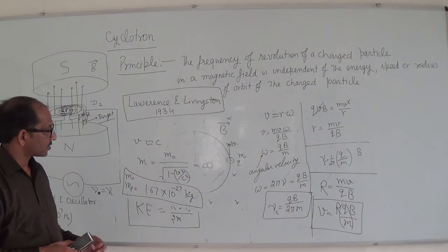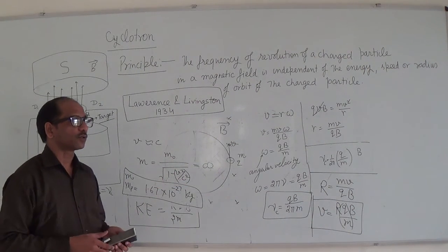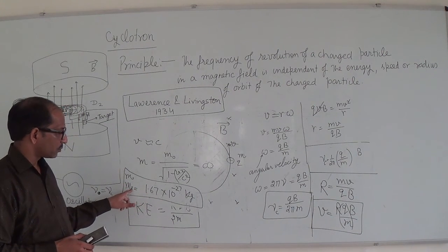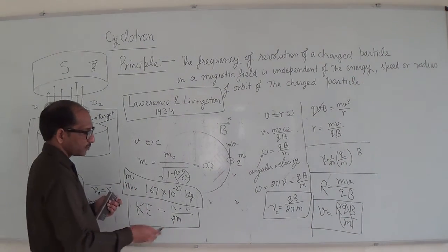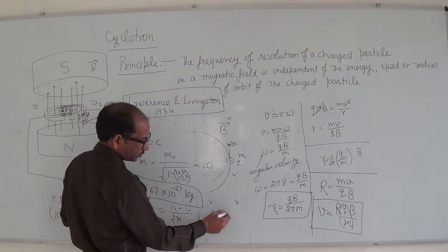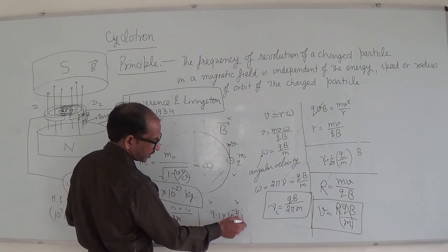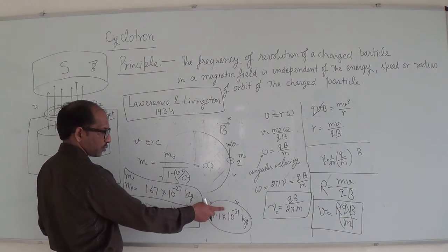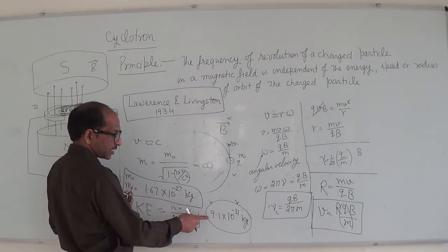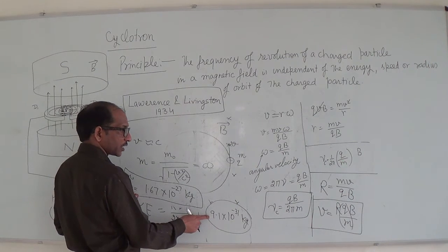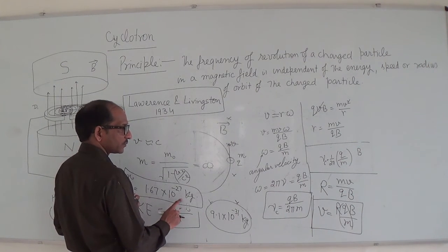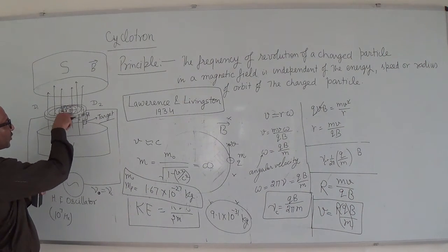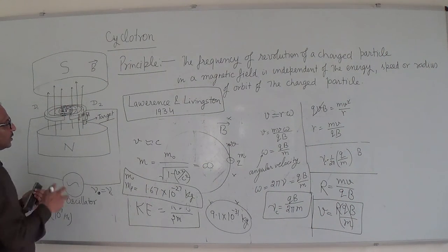So there are some limitations. You cannot accelerate electrons properly because the electron is a very light particle compared to the proton. The mass of the electron is 9.1 × 10⁻³¹ kg, which is four orders of magnitude smaller than the proton, so it gets quickly accelerated and is not handled properly — it may be destroyed inside the cyclotron.